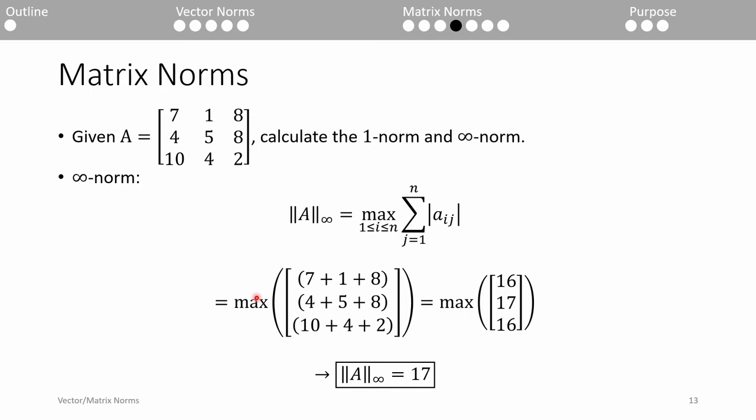The infinity-norm is the same as the column-sum norm, but we sum across the rows instead. This gives us 7 plus 1 plus 8 in the first row, 4 plus 5 plus 8 in the second row, and 10 plus 4 plus 2 in the third row. The largest sum is 17 in the second row, so our row-sum norm is 17.